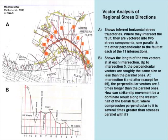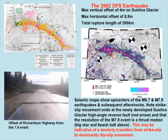The main point for the 2002 earthquake is that the 7.9 main event was a thrust feature, and the fault mapped in the vicinity of that epicenter may be indicative of a westerly transition to strike-slip, as the red print on the slide indicates.